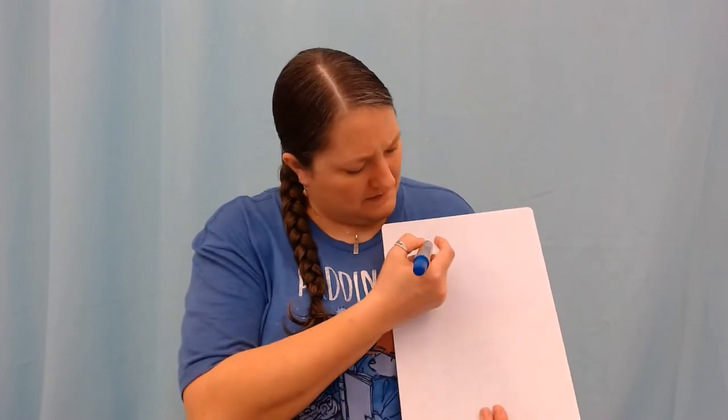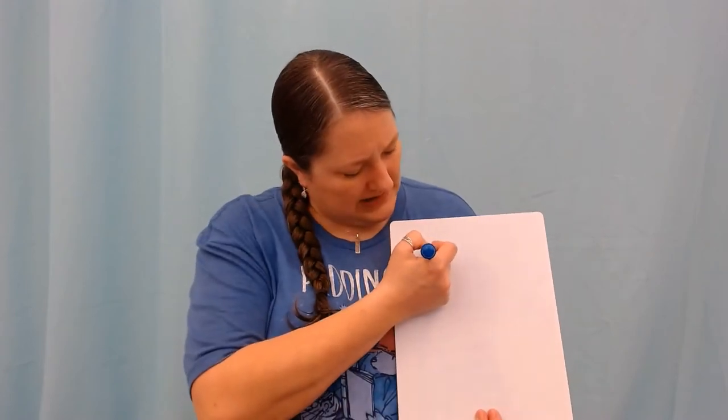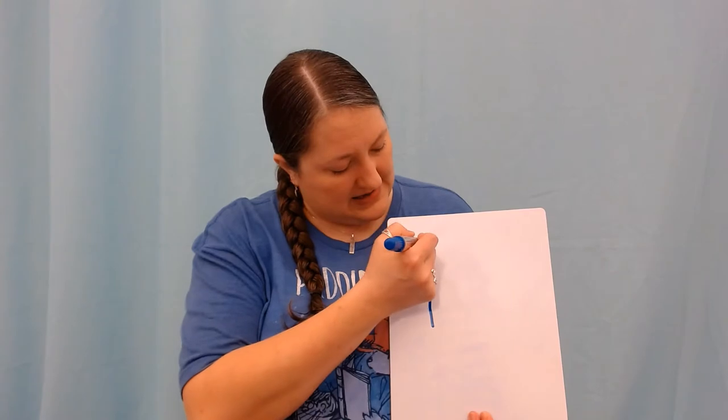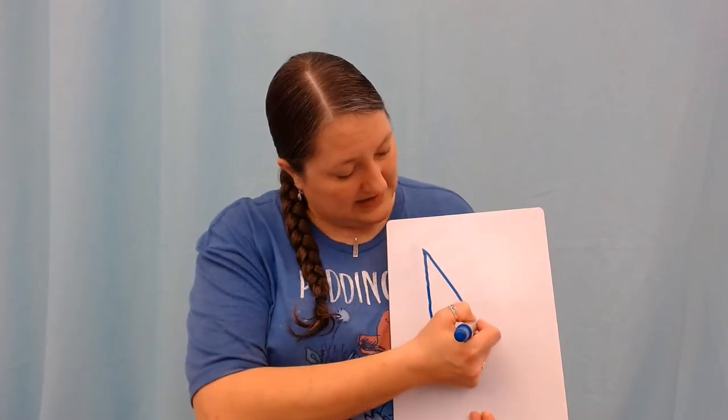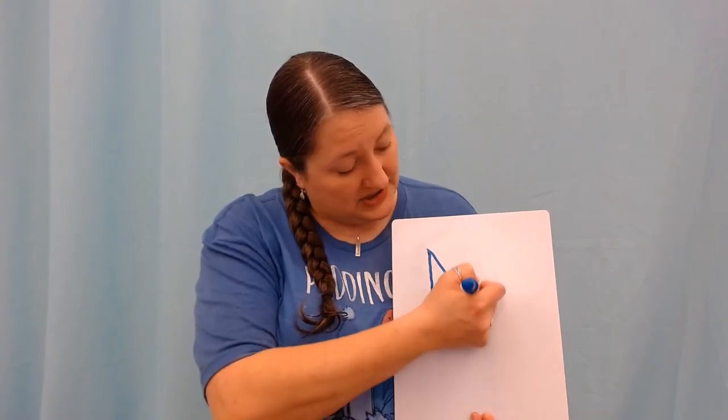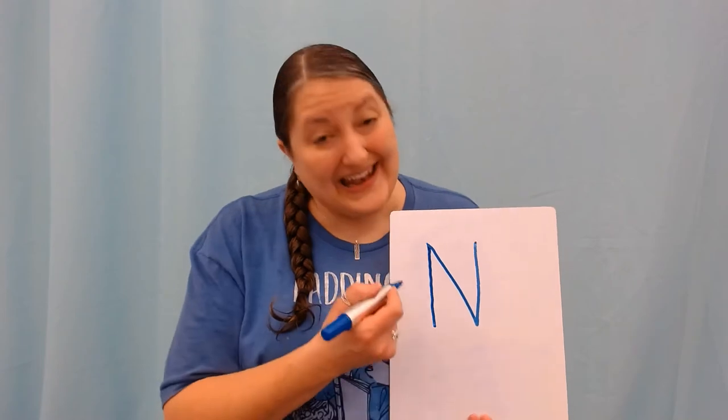If I pull down straight and then slant right and push up straight, what do we have? N. N is the name of this letter. Now this is our uppercase N, or our big N.